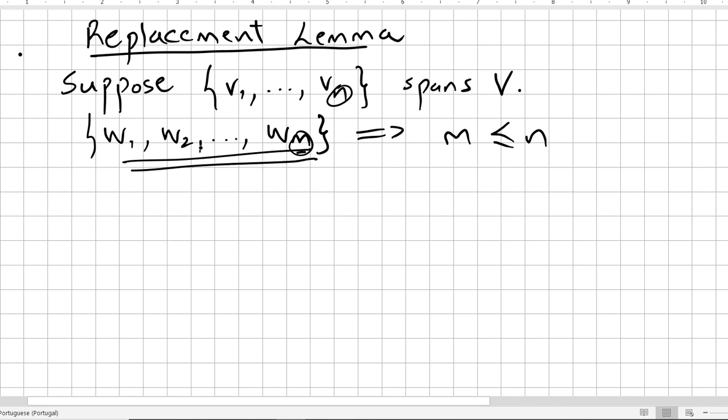This set of vectors being all independent. So if this happens, that means that m has to be smaller or equal to n.